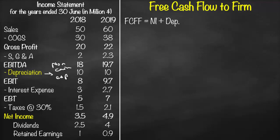Before net income, we paid interest to debt holders, so we need to add back our interest. Since interest is tax deductible, we multiply it by one minus the tax rate. Therefore, we add back interest expense multiplied by (1 - tax rate).